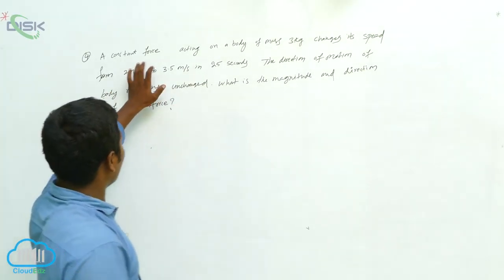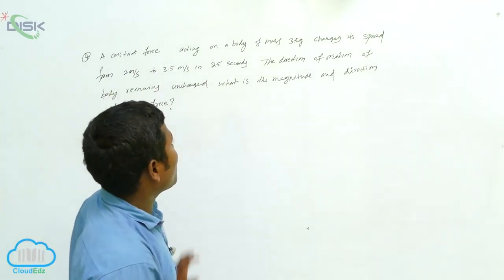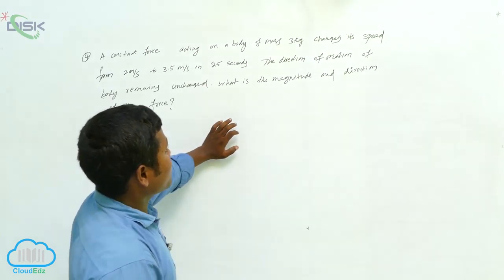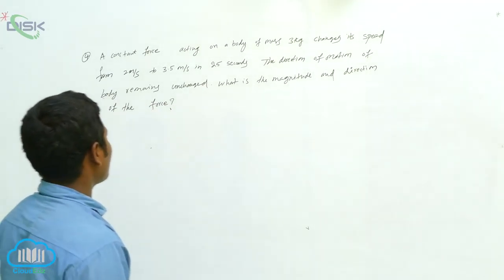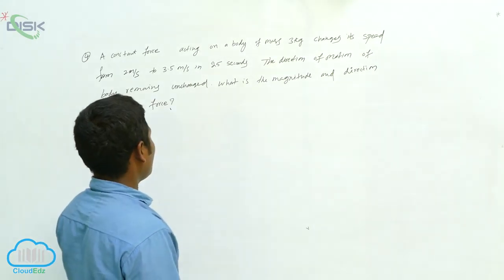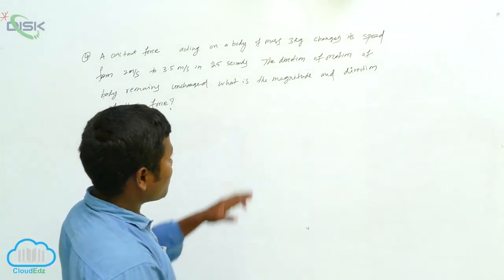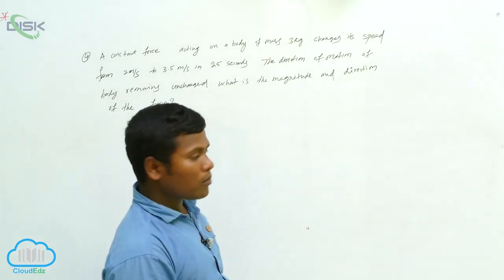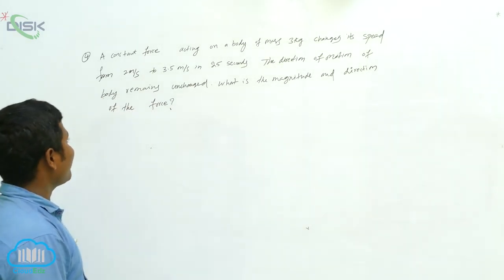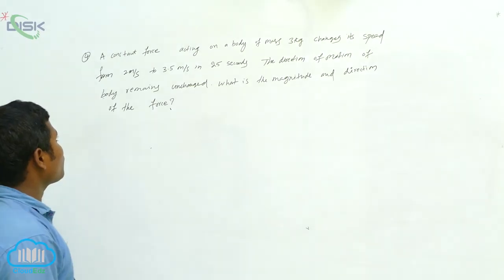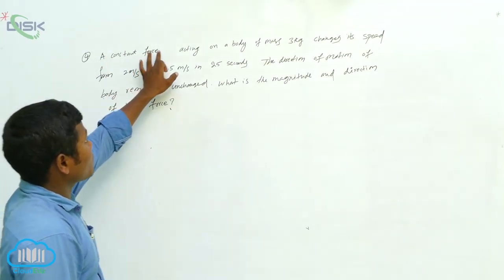Problem number four: a constant force acting on a body of mass three kilograms changes its speed from two meters per second to three point five meters per second in twenty-five seconds. The direction of motion of the body remains unchanged. What is the magnitude and direction of the force?